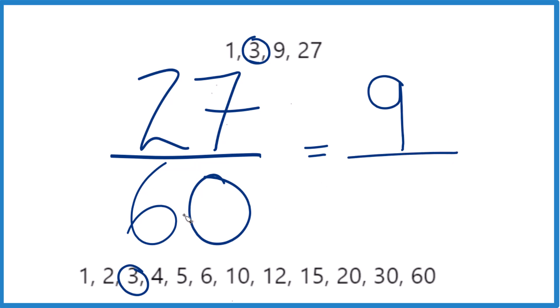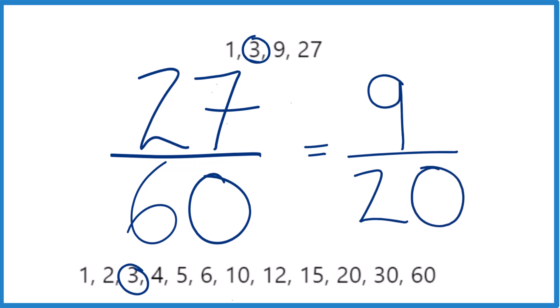And then we divide 60 by 3. 60 divided by 3 is 20. So when we simplify the fraction 27 60ths, we end up with 9 20ths.